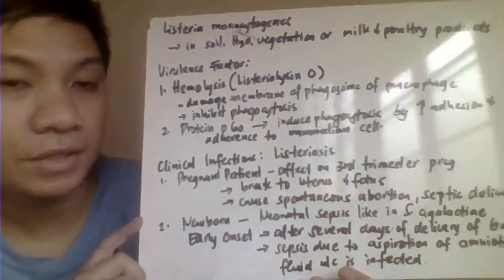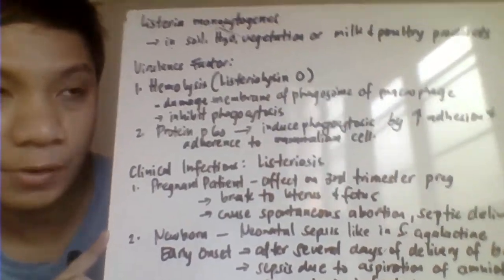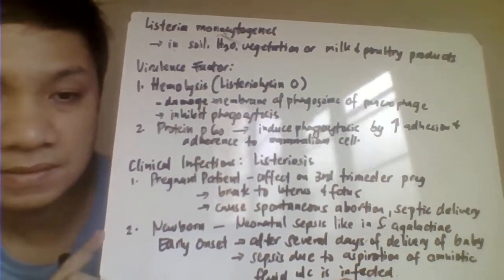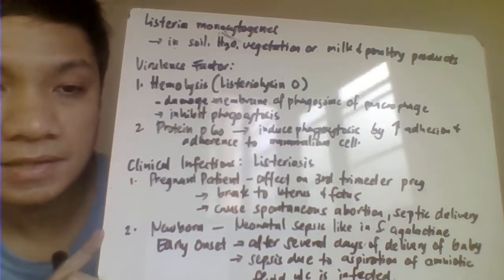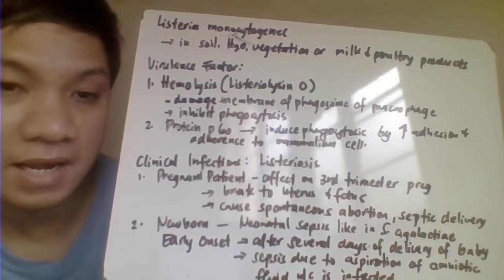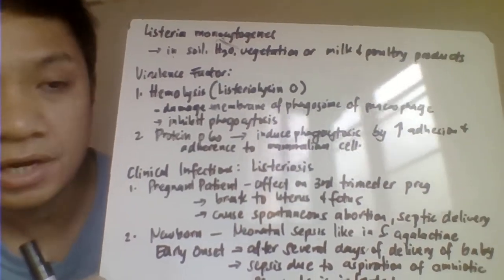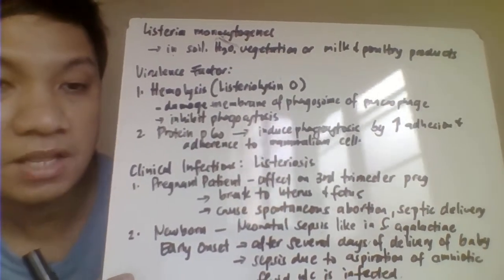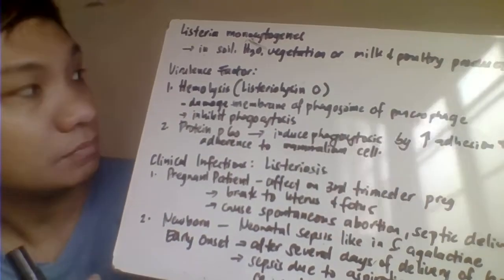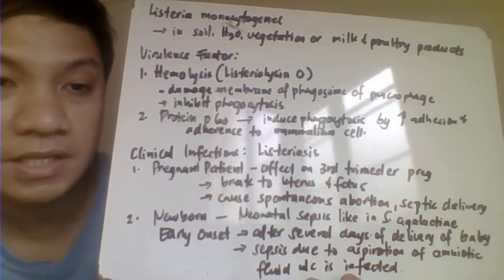Next, we discuss the catalase-positive gram-positive aerobic bacillus — Listeria monocytogenes. Listeria monocytogenes can be found in a variety of environmental areas: water, soil, vegetation, or even poultry products or milk products. The virulence factors associated with Listeria include listeriolysin O — your hemolysin.